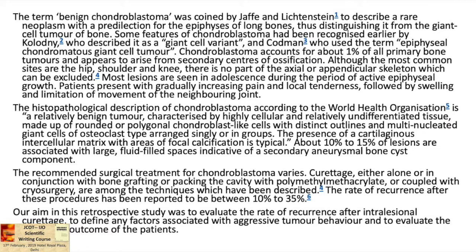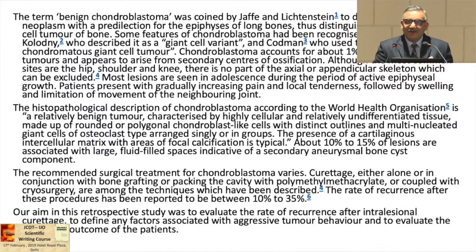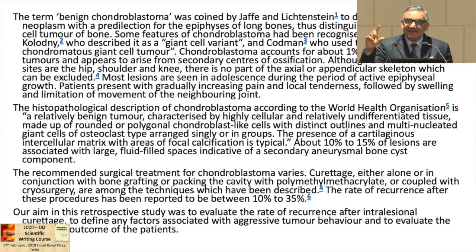Then he noted a little bit about its percentage — one percent — then where it occurs, which age group is affected, and that most lesions are seen in adolescence. The common presenting feature is in one line: swelling and limitation of movement, sometimes synovitis. Then he described a word about the histological aspect of this disease. This is a smooth flow: first historical aspect, then percentage, then a little bit of clinical aspect, then population, then histological aspect — that the chondroblast is the cell of origin and chicken-wire calcification is the main feature. He also discussed that 10 to 15 percent of lesions are associated with large fluid-fluid levels, meaning there can be a secondary aneurysmal bone cyst as well.